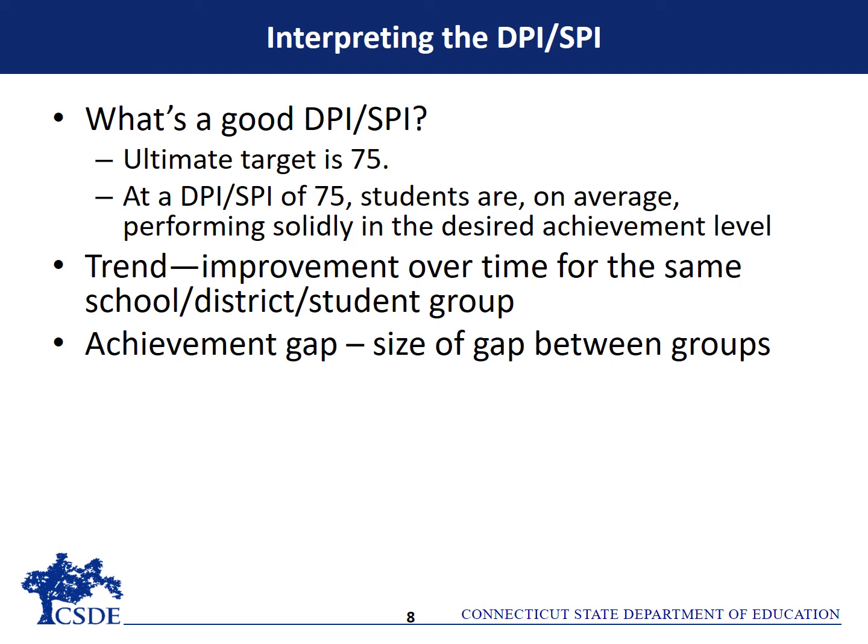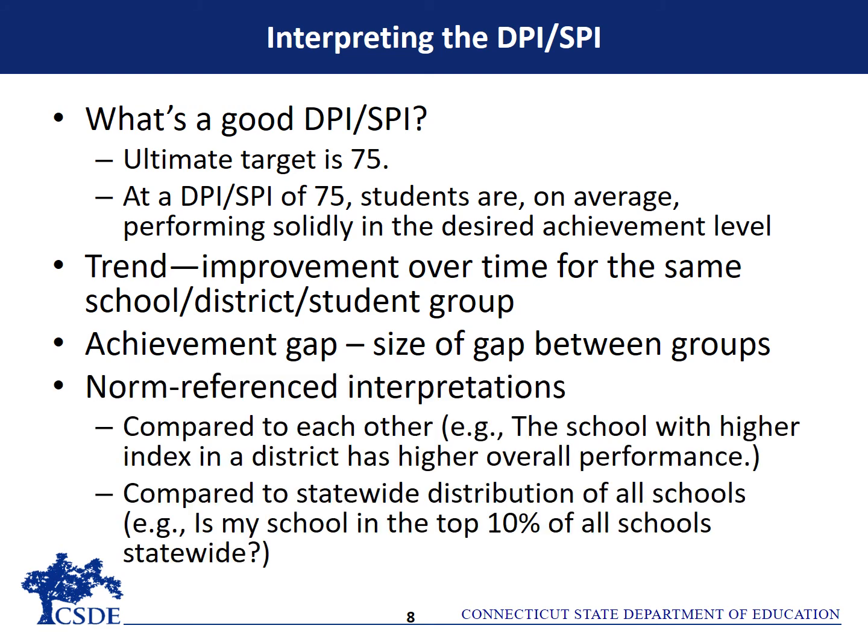Having a measure of average performance across all grades and tests allows leaders at both the district and school levels to have a high-level view of achievement in a subject. Another way to make sense of the DPI or SPI is to look at how your district or school compares to the statewide performance index or to other districts or schools in the state.